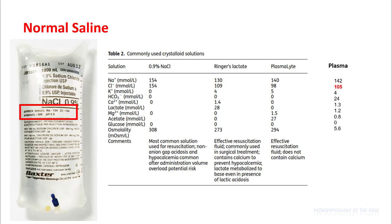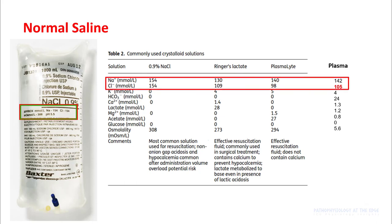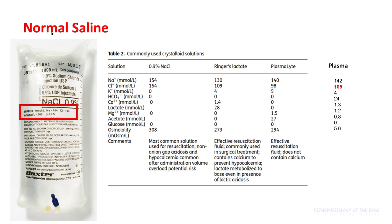Normal saline is the commonest cause of non-anion gap acidosis in hospitalized patients. You can see that it contains quite a lot of chloride at 154 millimoles per liter, while your plasma concentration is only 105. The pH of normal saline solution is not neutral but is acidic in nature, running around pH 5.5.